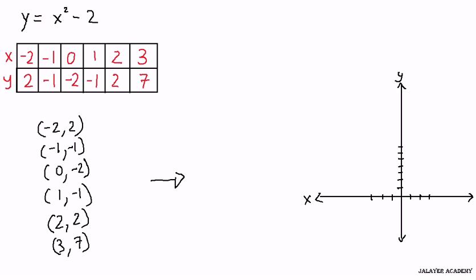And let's just go ahead and plot these points. Let's use a different color and have some fun. So let's start with this point right here. Negative 2 comma 2. So we go over 2 to the left and 2 up. And that's negative 2 comma 2.